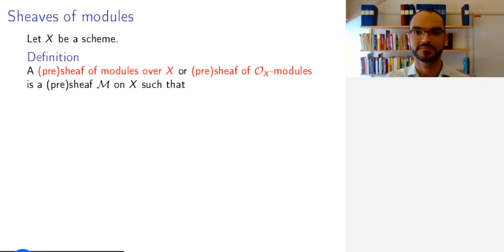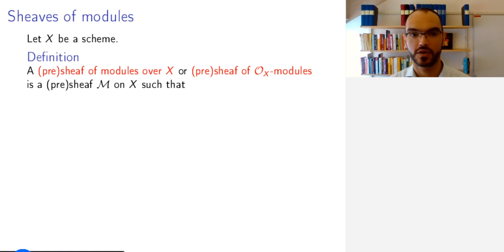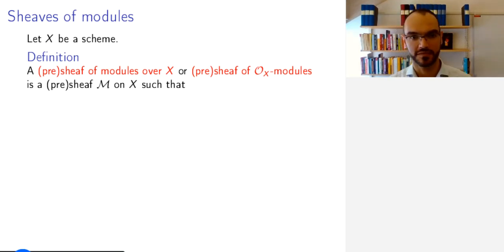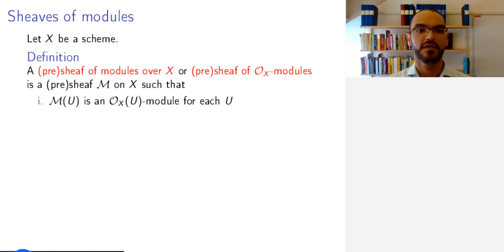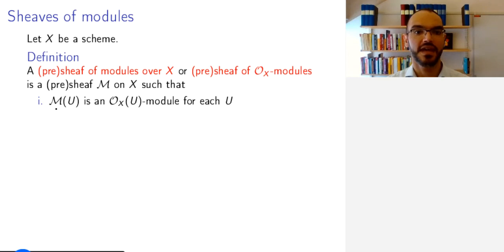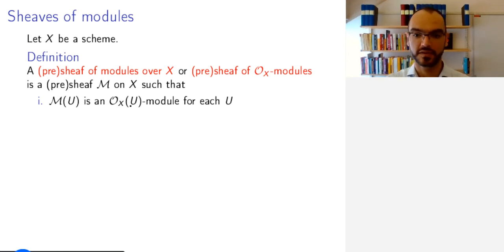So let's get started. We fix a scheme X, and we want to define a pre-sheave of modules over X, also known as a pre-sheave of OX modules. It is a pre-sheave M on X — meaning a pre-sheave of sets on X — such that for each open subset U of X, M of U is a module over the ring OX of U.